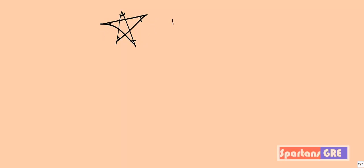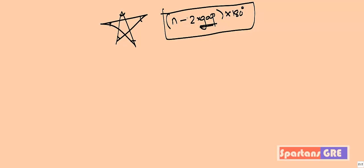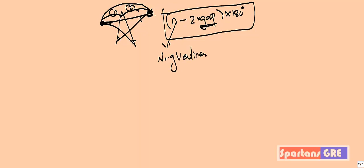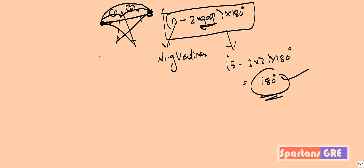The total internal angle for any figure is given by the formula: (n minus 2 times gap) times 180 degrees. Here, 'gap' means: if you take one straight line and want to go from one end to the other, how many jumps do you have to make? For this star, going from one end to the other requires 2 jumps, so the gap is 2. Plugging in: (5 minus 2×2) × 180 = (5 minus 4) × 180 = 180 degrees. So the total internal angle of this 5-pointed star is 180 degrees.